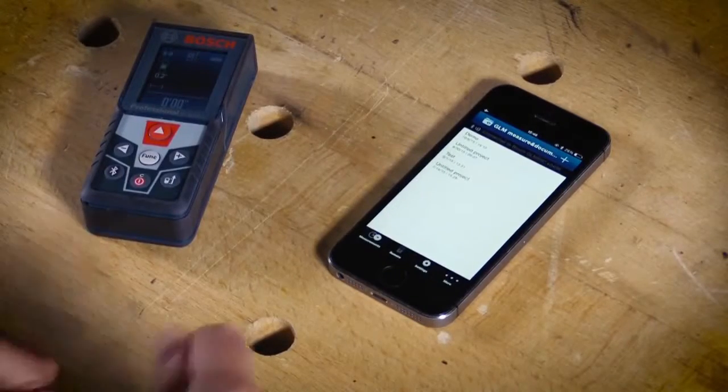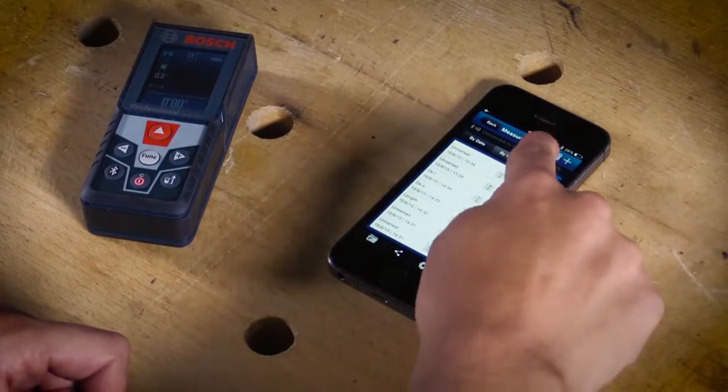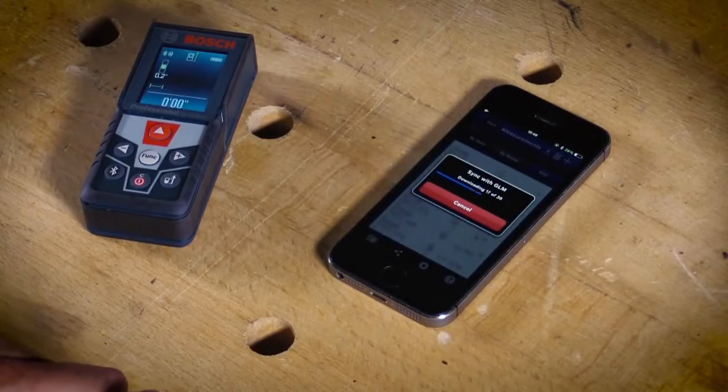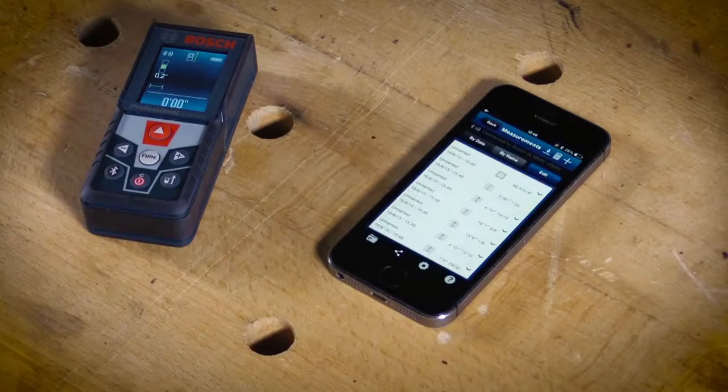In the main menu when you click the measurement icon you're then able to sync up any measurements you've taken on your device that aren't already loaded to your app by simply hitting the download button. From here it will automatically sync every measurement you've taken to your smartphone.